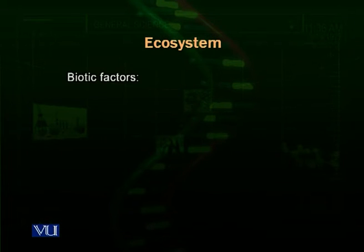Ecosystems have biotic factors, but the ecosystem also consists of biotic factors and abiotic factors. Biotic factors are the living factors — the living parts of the ecosystem: the plants, animals, bacteria, fungi, viruses — all of the living components. The abiotic factors are equally important because biotic factors, the living organisms, depend upon the physical factors — the abiotic factors.